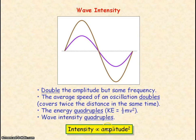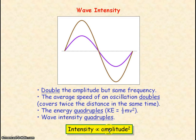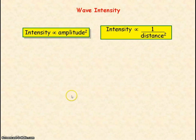By doubling the amplitude we get four times the wave intensity. This relationship gives us: intensity is directly proportional to amplitude squared. So double the amplitude gives 2² = four times the intensity, and three times the amplitude gives 3² = nine times the intensity.